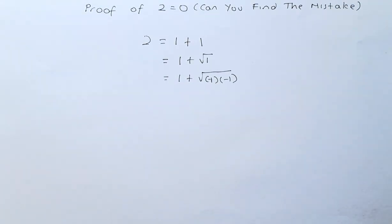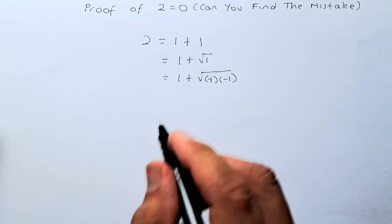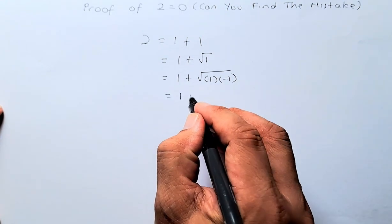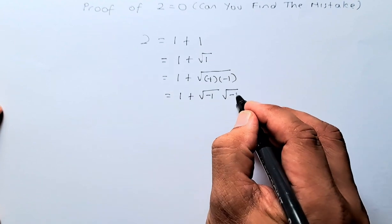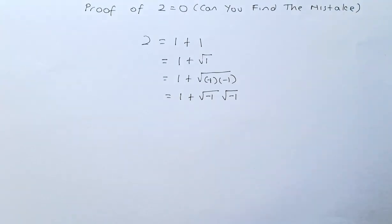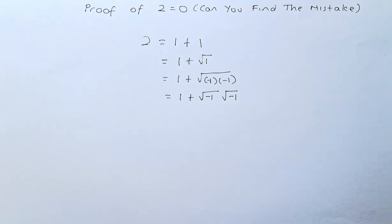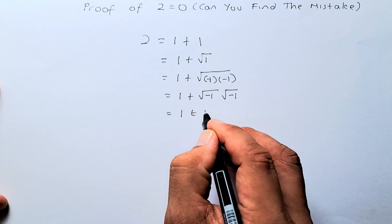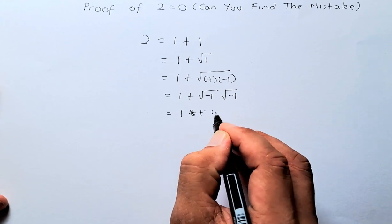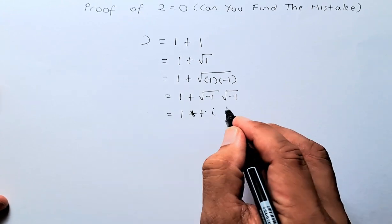The next step they did was to take the square root of each term, so it becomes 2 equals 1 plus square root of negative 1 multiplied by square root of negative 1. We know that the square root of negative 1 is an imaginary number, so it becomes 1 plus i times i.